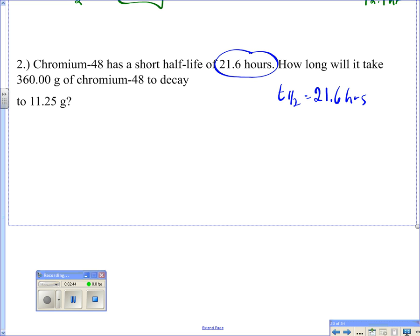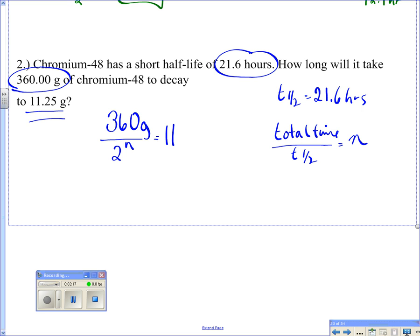But in this case, it's looking for how long it will take. It's looking for that total time. So remember that total time divided by my half-life is going to give me n. So let's look at our formula then. We take our starting amount, so how long will it take for 360 grams of chromium? So we have 360 grams. We know we're going to divide it by 2 to the n. But in this case, it tells me the answer. It tells me I'm going to have 11.25 grams remaining.